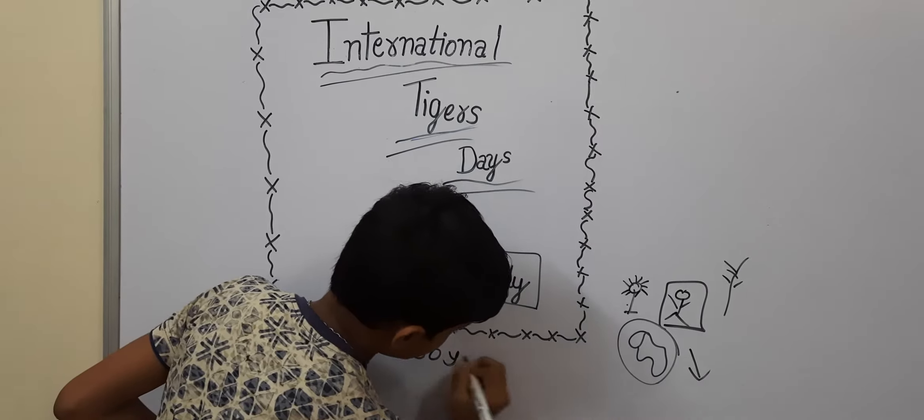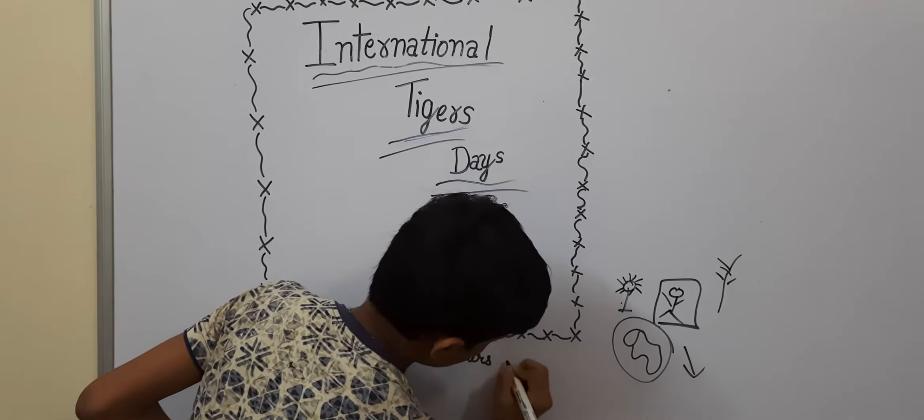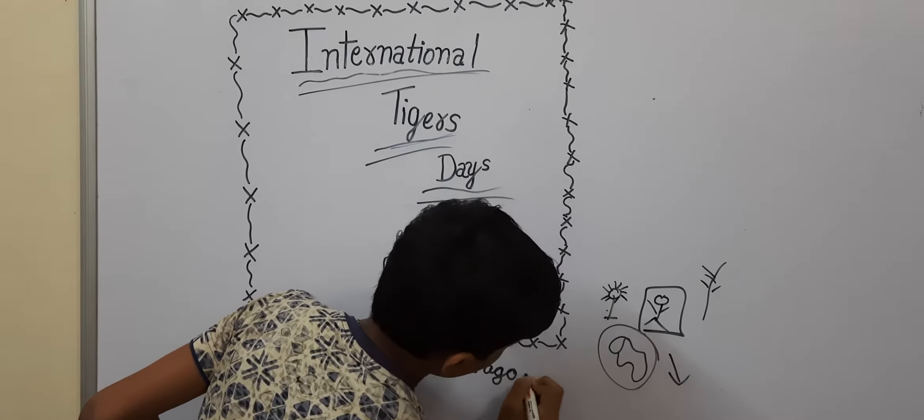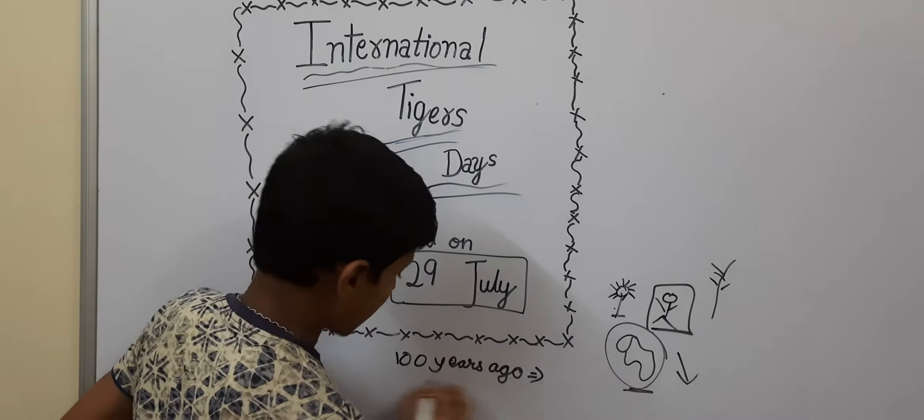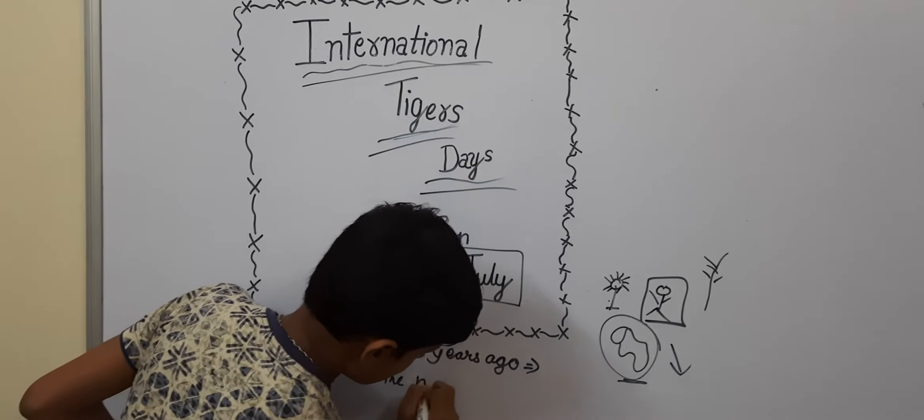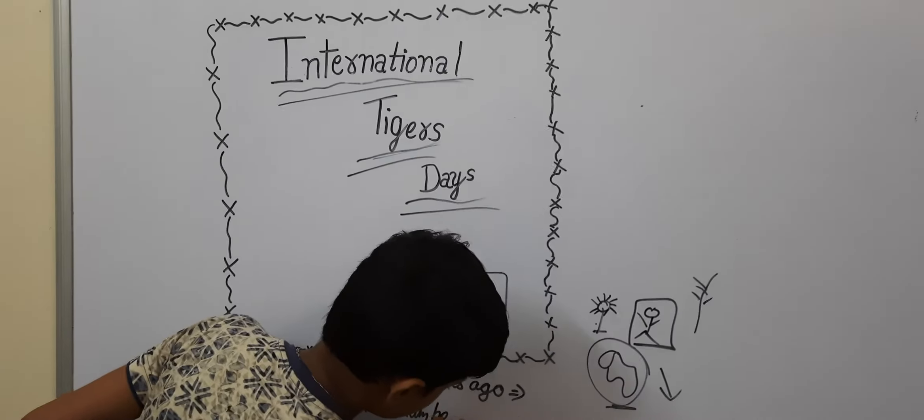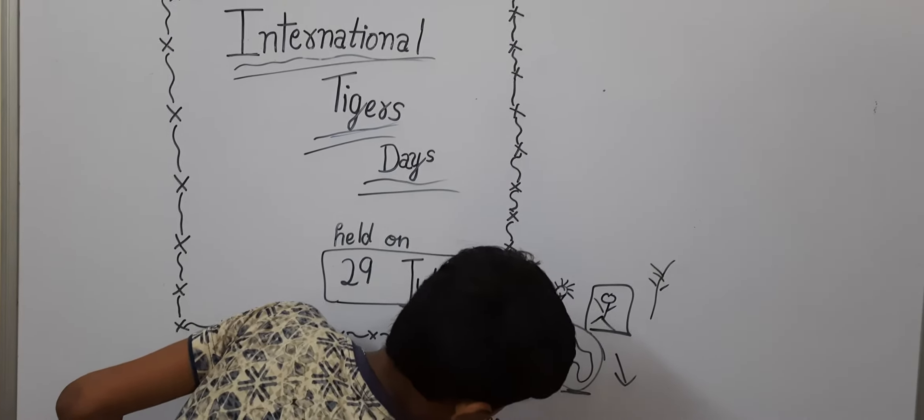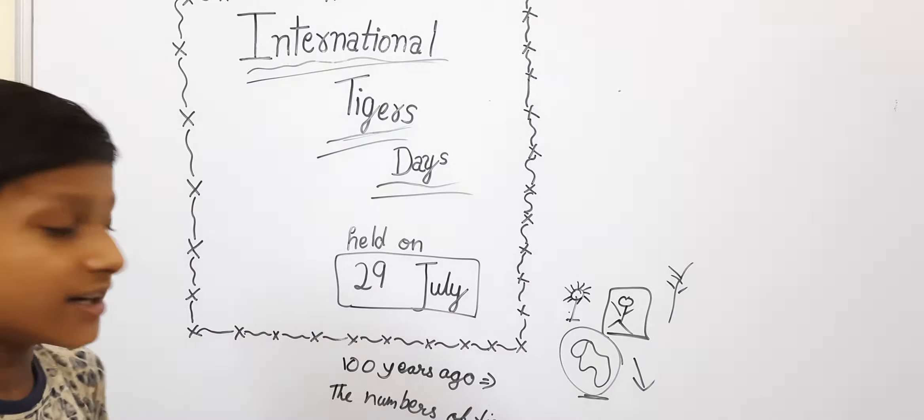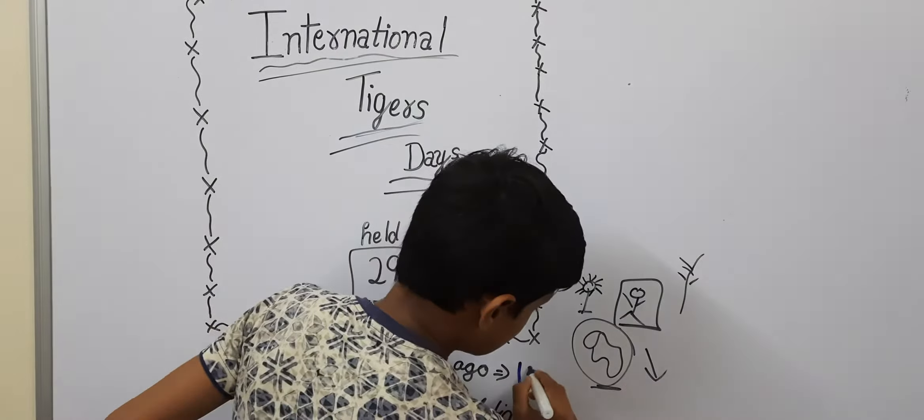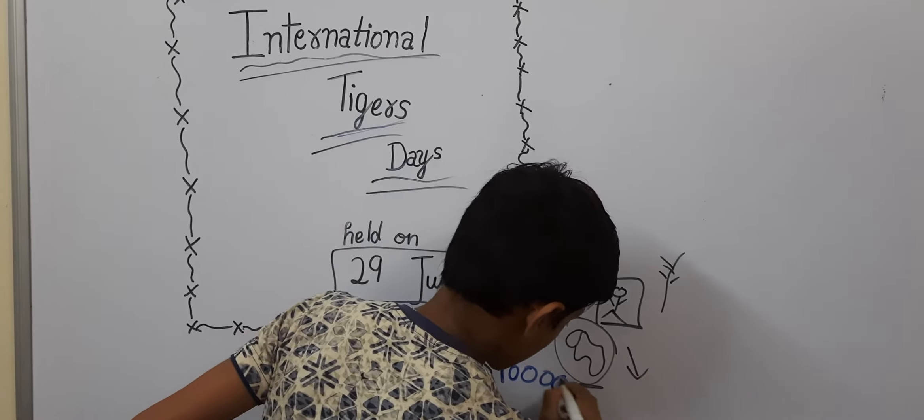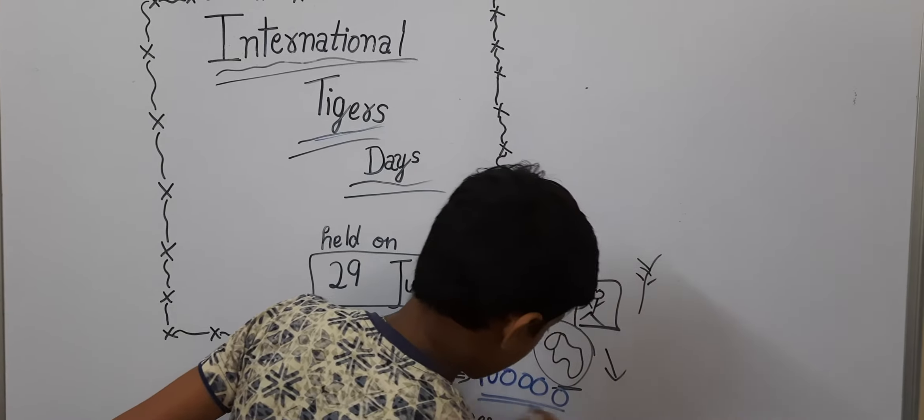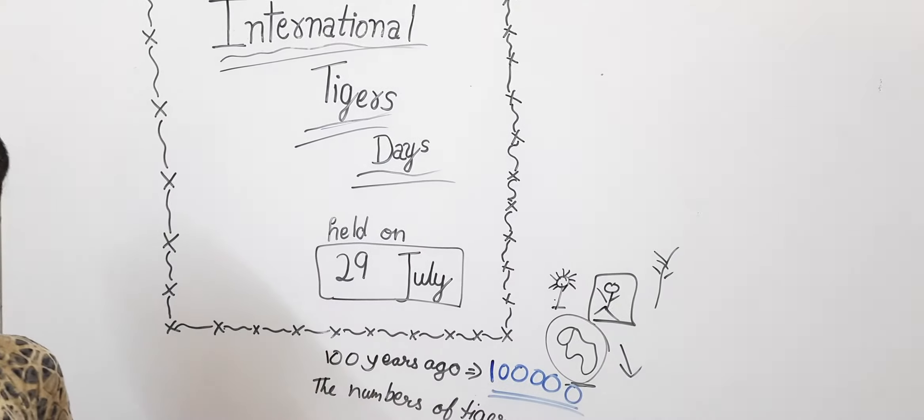100 years ago, the number of tigers. In 100 years ago, the number of tigers is 1 lakh. 1 lakh tigers are there 100 years ago.